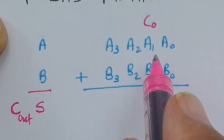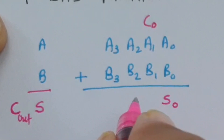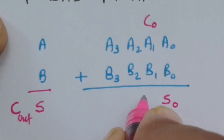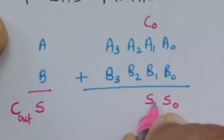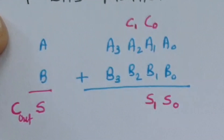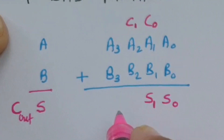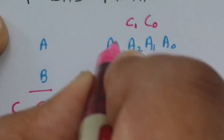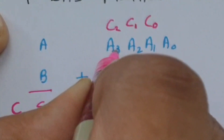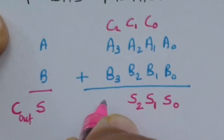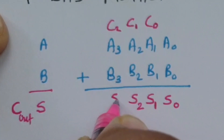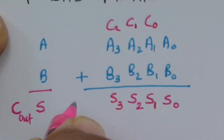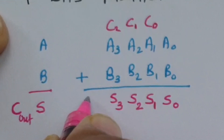C0 plus A1 plus B1 need to be added, and that generates S1 output and carry C1. Then C1, A2, and B2 get added, generating sum S2 and carry C2. Then C2, A3, and B3 get added, generating S3 and carry C3.